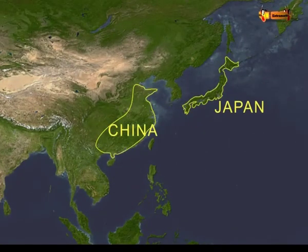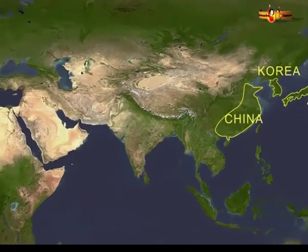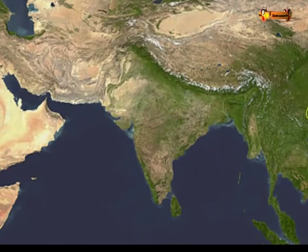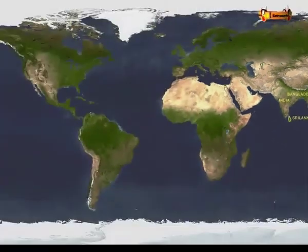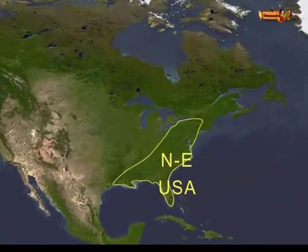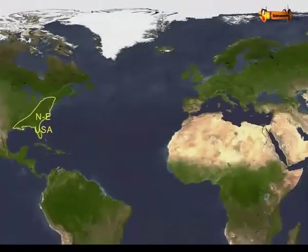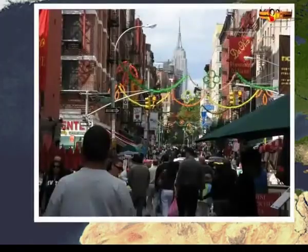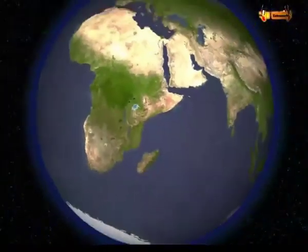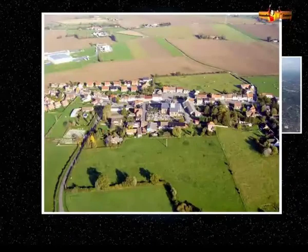The four areas of human concentration are: eastern Asia, including China, Japan, and the Republic of Korea; southern Asia, comprising the Indian subcontinent including India, Bangladesh, and Sri Lanka; the northeastern part of the United States of America; and central and northwestern Europe.